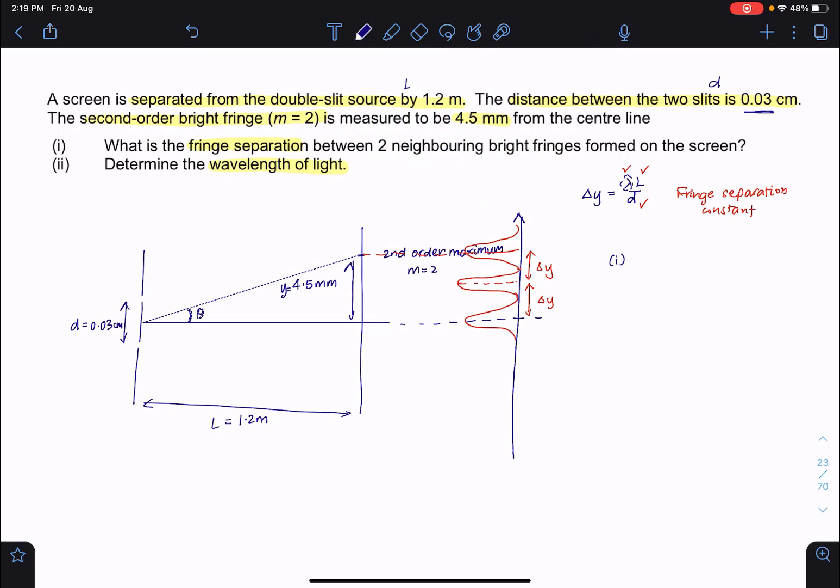So we can see that in the 1st part, that 4.5 mm corresponds to 2 times of delta Y. This will mean that delta Y itself is actually equals to 4.5 divided by 2. And that gives us 2.25 mm. So that's your first answer.